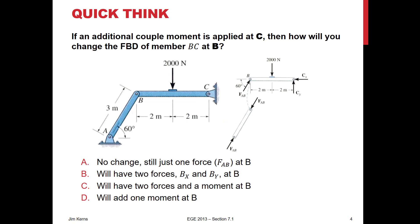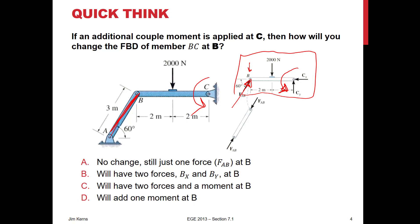An additional couple moment is applied at C, so I'm going to apply an additional couple moment here. How does this change the free body diagram of member BC at B? Member AB is a two-force member, so it is applying a force in this direction only. Adding this couple is going to change the magnitude of that force, but it's not going to change the direction or type of that force. So the answer is A - still just one force at AB.